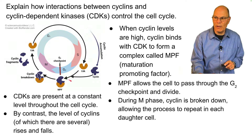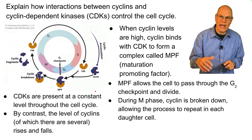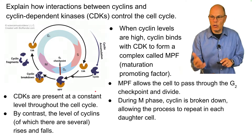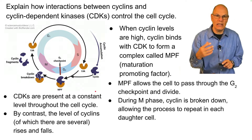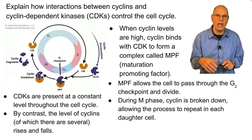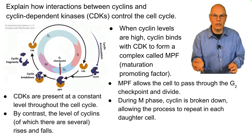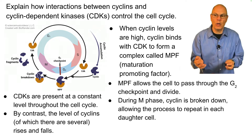During M phase, the cyclin is broken down, and that allows the process to repeat in each daughter cell when it grows to the appropriate size and gets ready for cell division.